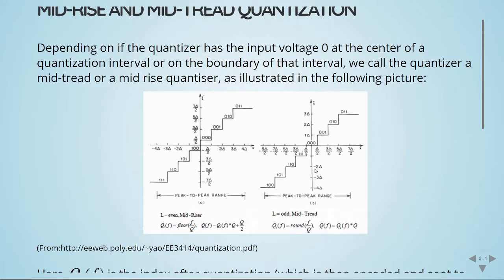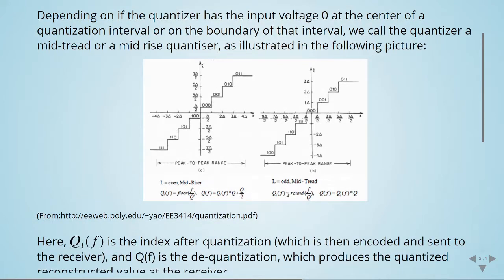So here we have a mid-tread quantizer, where there is the input voltage zero at the center of a quantization interval. We see that we have the index after quantization given by rounding, and then the reconstruction or the dequantization, which is the quantization index times the step size.